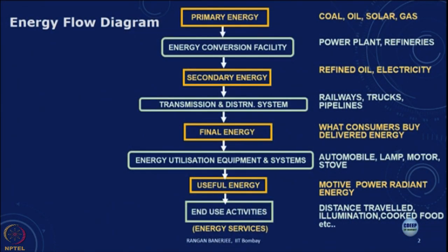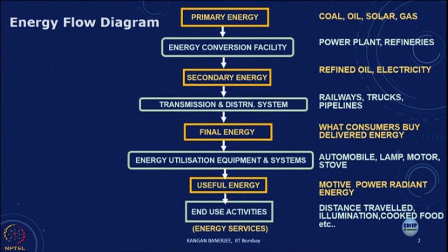In the last lecture, we looked at the energy flow diagram and we saw how whenever we want to use energy, the final energy in terms of the energy service or end use activity requires primary energy — the energy available in nature — which goes through a sequence of conversion steps before we get the final energy service. At each of these steps some amount of energy is used, and in using that energy there is also an adverse environmental impact.